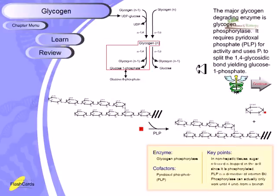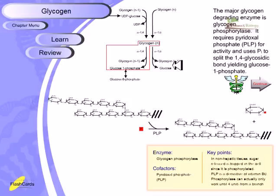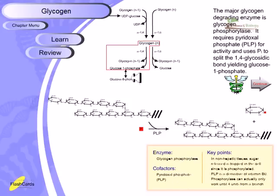The major glycogen degradation enzyme is glycogen phosphorylase. It requires pyridoxal phosphate (PLP) for activity and uses inorganic phosphate to split the alpha-1,4 glycosidic bond, producing glucose-1-phosphate from glycogen in each round of degradation. In non-hepatic tissues, the sugar released is trapped in the cells since it is phosphorylated.